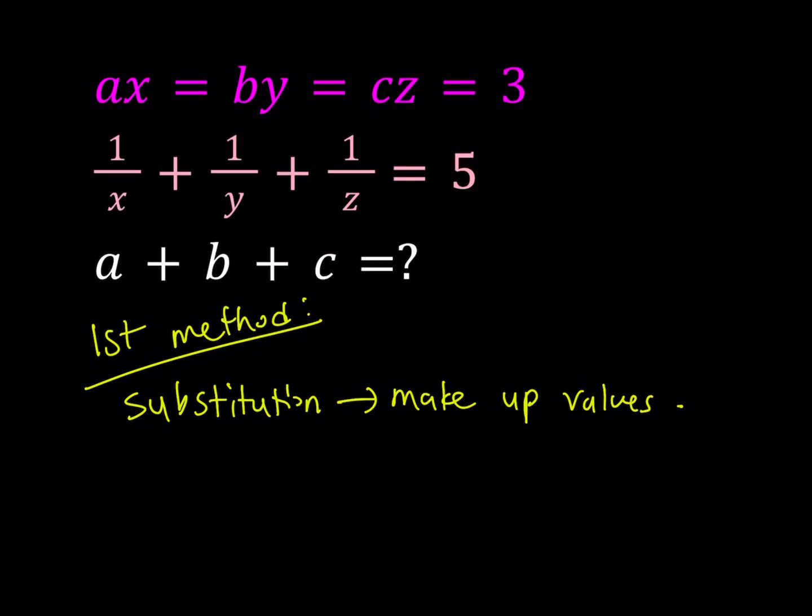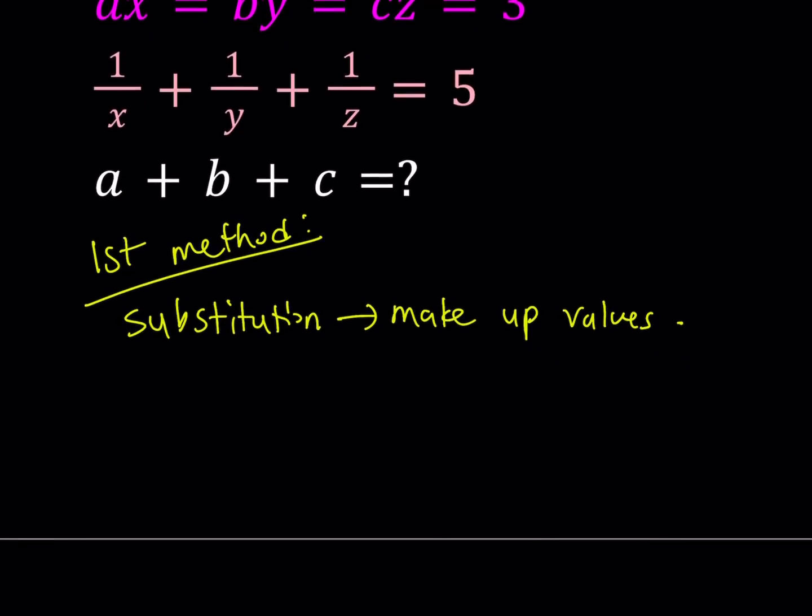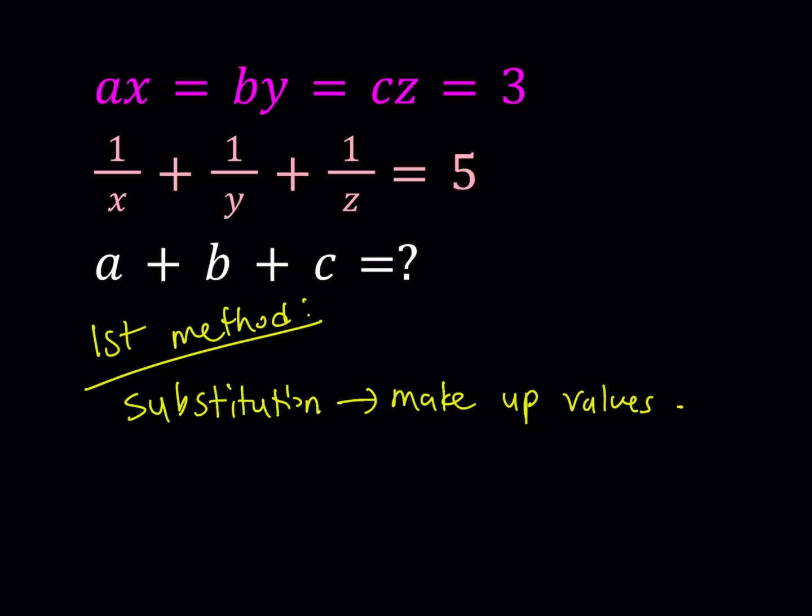Since we have some freedom, we can't really choose all of A, B, C or all of X, Y, Z. But we can choose some of them. So, here's what I'm going to do. And since I'm given, why did I say four equations? Because this one gives us three equations and this one gives us another equation. So, that's a total of four equations for six unknowns.